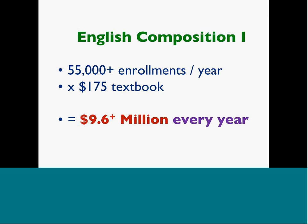One example on textbooks: back in the Washington Community and Technical Colleges, the highest-enrolled course was English Composition I. Enrollments are now about 60,000 students a year through this course. You can see the amount of money students are spending on one textbook, for one course, in one system, in a very small state. Is this a good use of money?